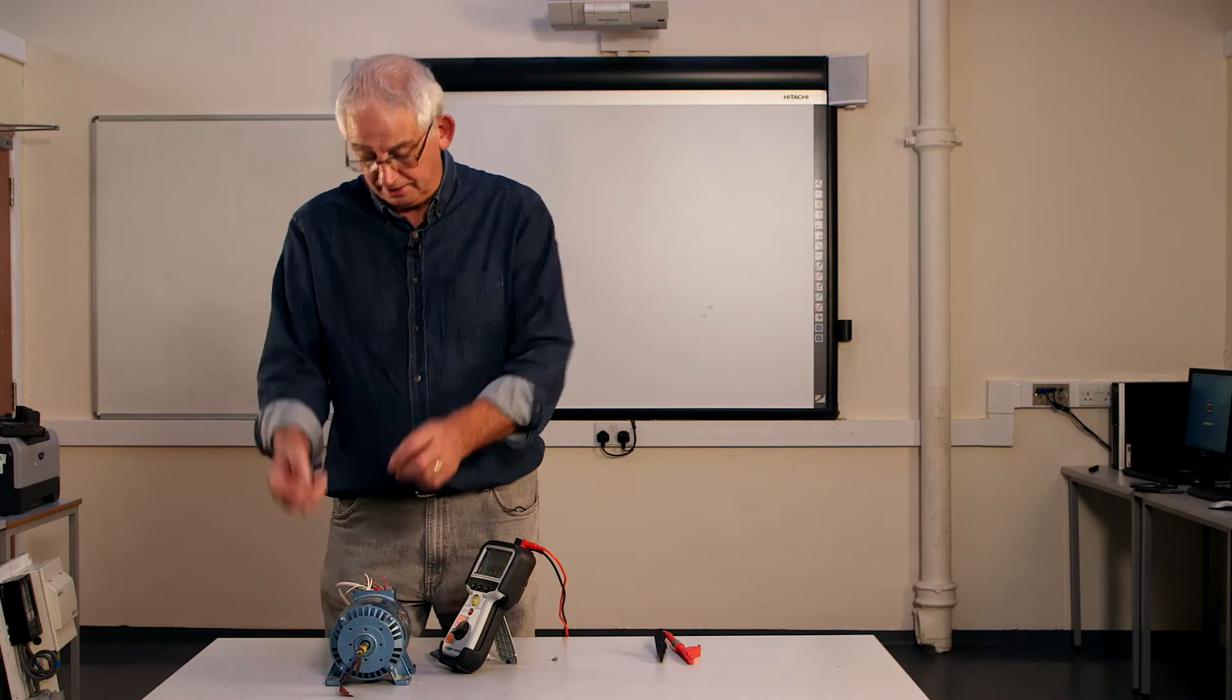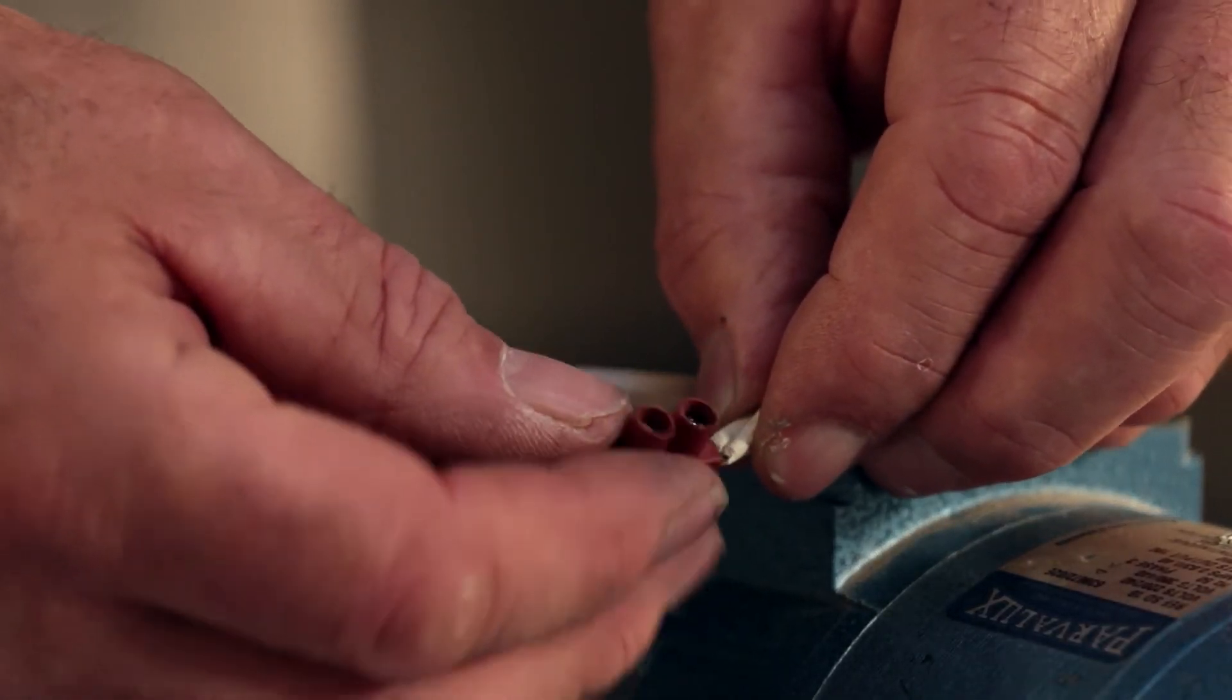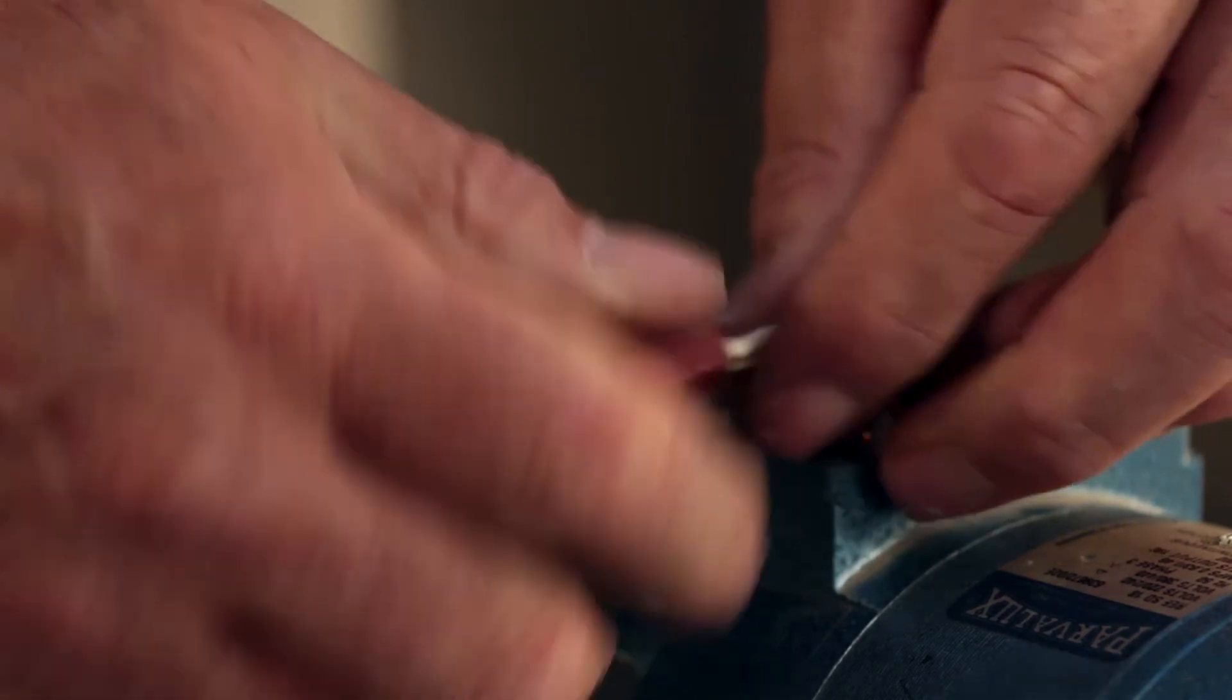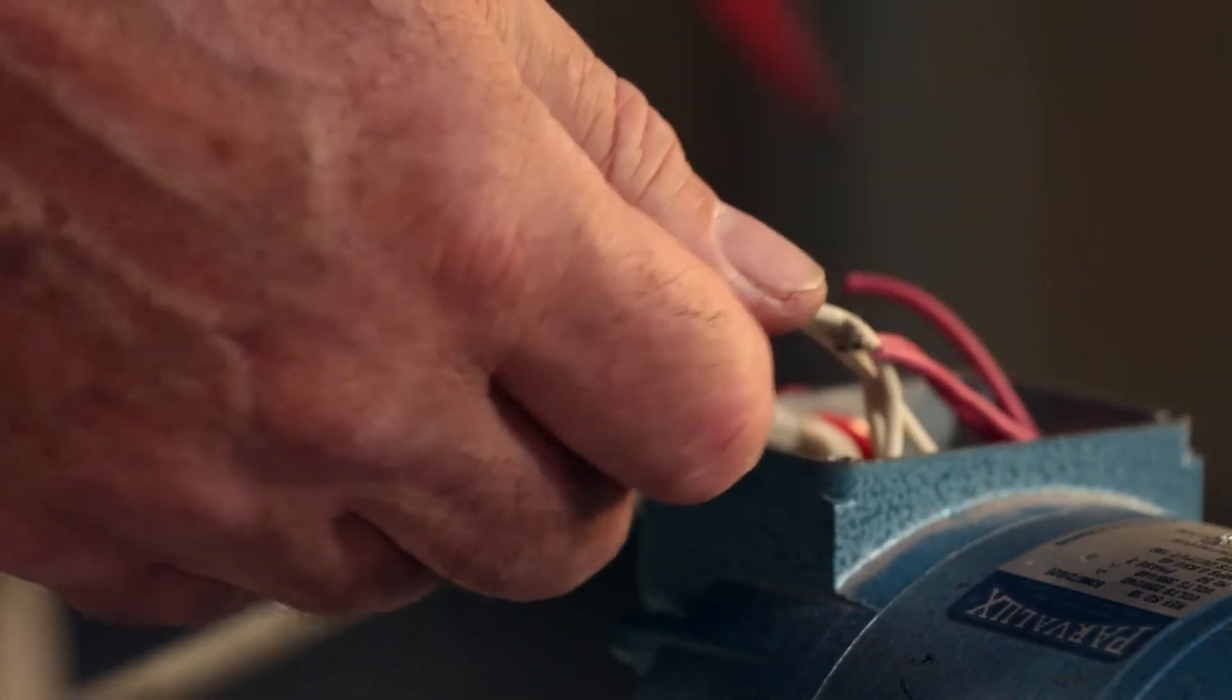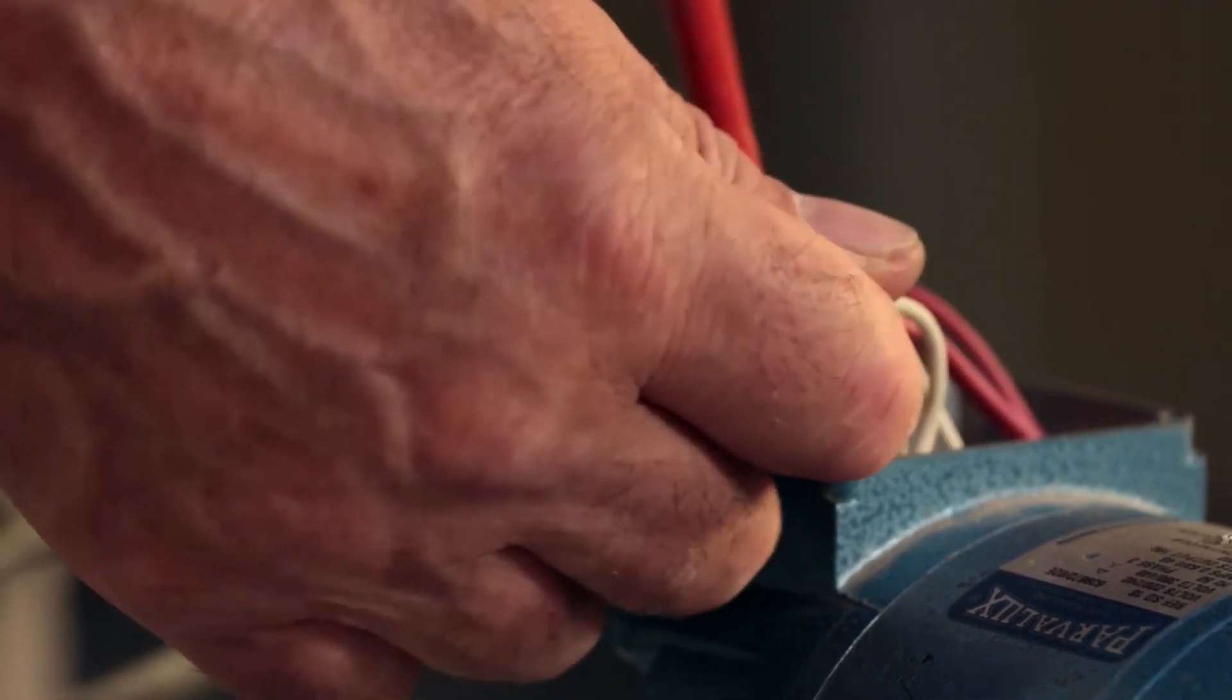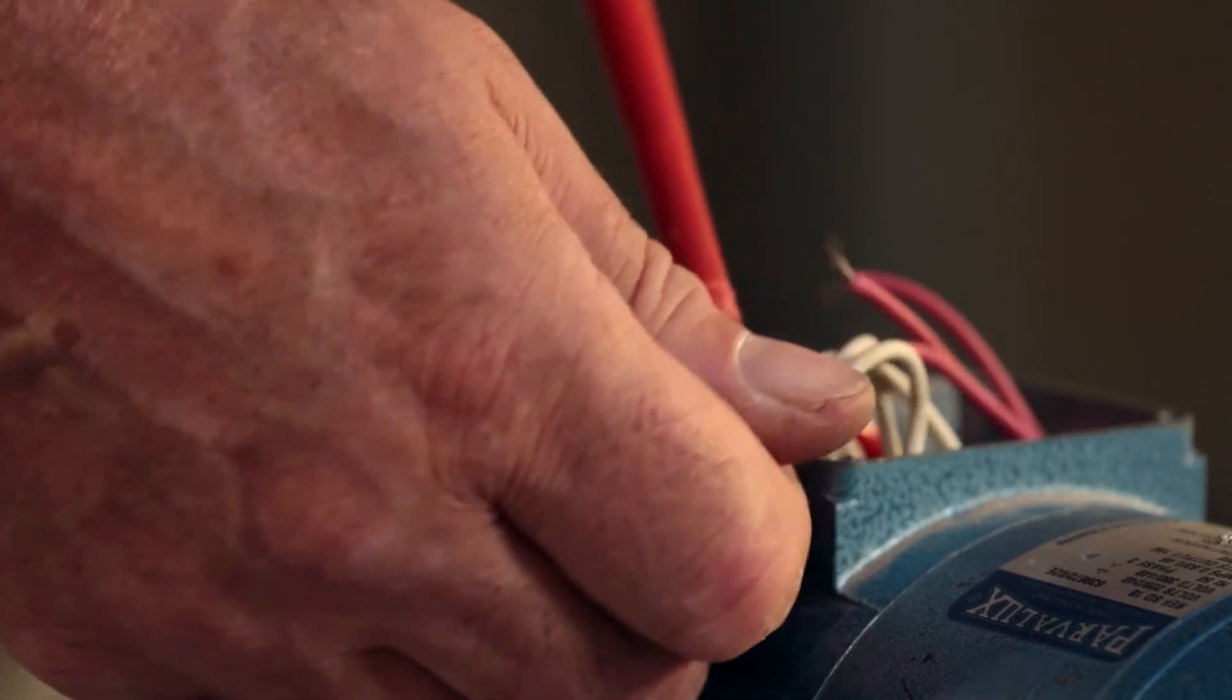So just need to connect the three. Doesn't matter where I use the pink ones or the white ones, but I'll connect the three white ones together in a connector block. Make sure I do it up nice and tight because we don't want any loose connections. If we get a loose connection, we'll get a lot of heat. And then in the end, we'll have a fire in the motor, which is no good to anybody.